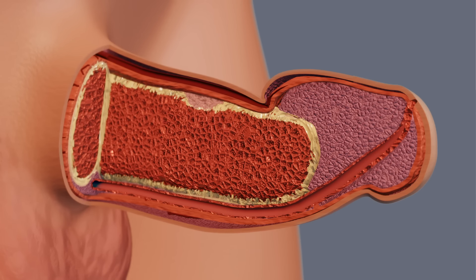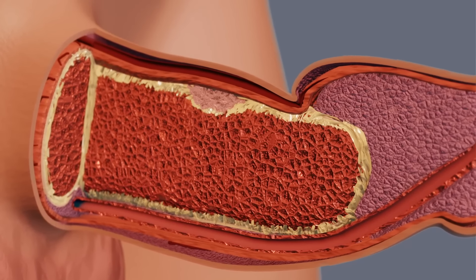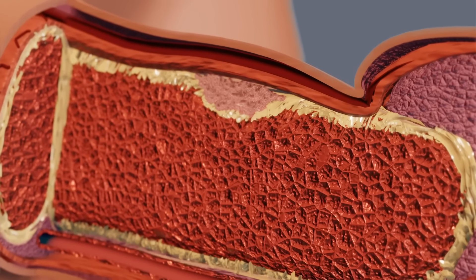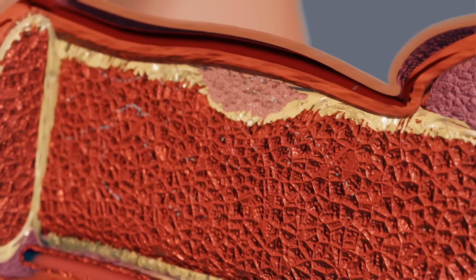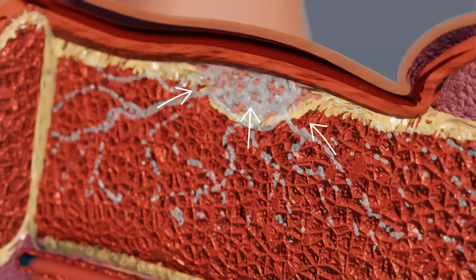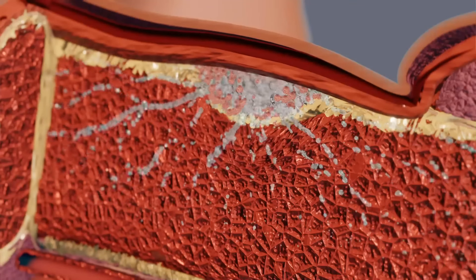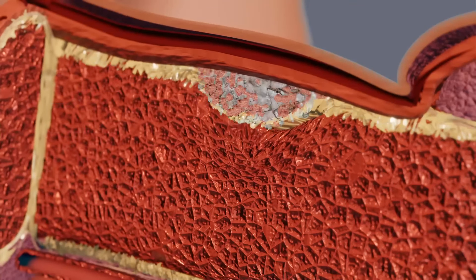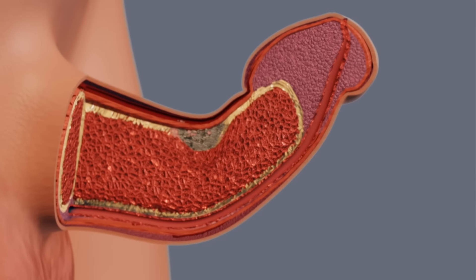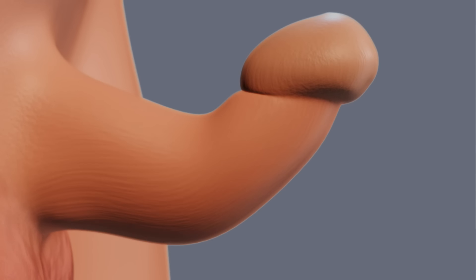As the tumor grows, the body recognizes it as abnormal and begins to attack it, which can lead to pain and eventually scar formation. Once the scar is in place, it restricts the expansion of the penis so that curvature or deformity may occur.